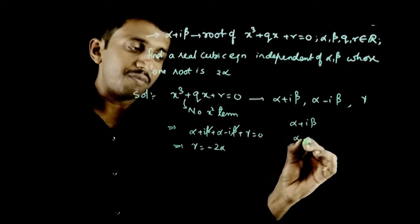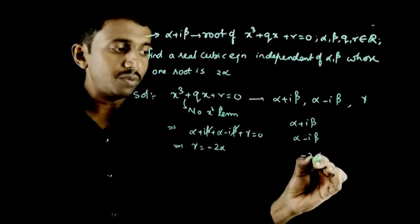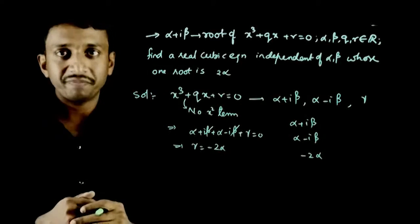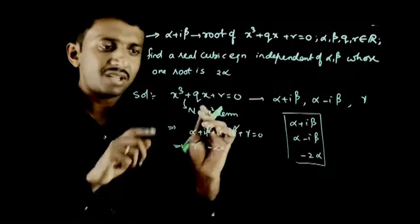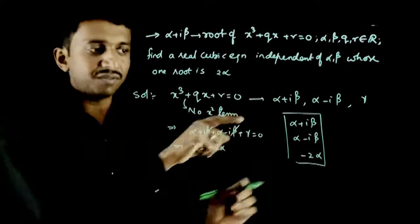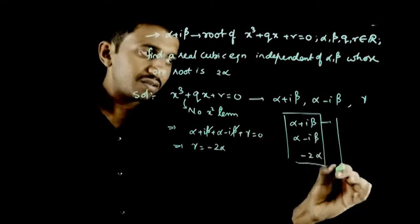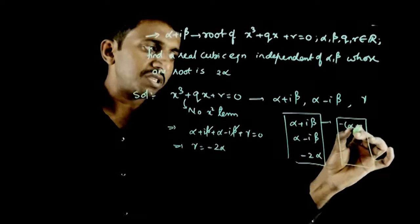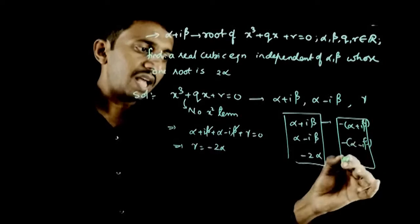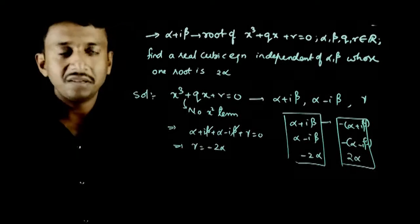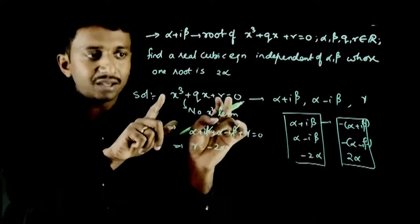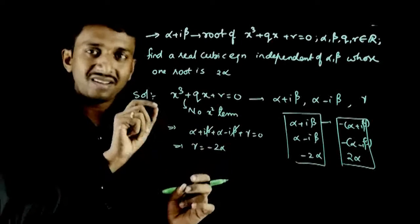The roots are alpha + i*beta, alpha - i*beta, and minus 2*alpha. The question wants a cubic equation whose one root is plus 2*alpha. We can construct a cubic equation whose roots have exactly the opposite sign of the roots of this equation.